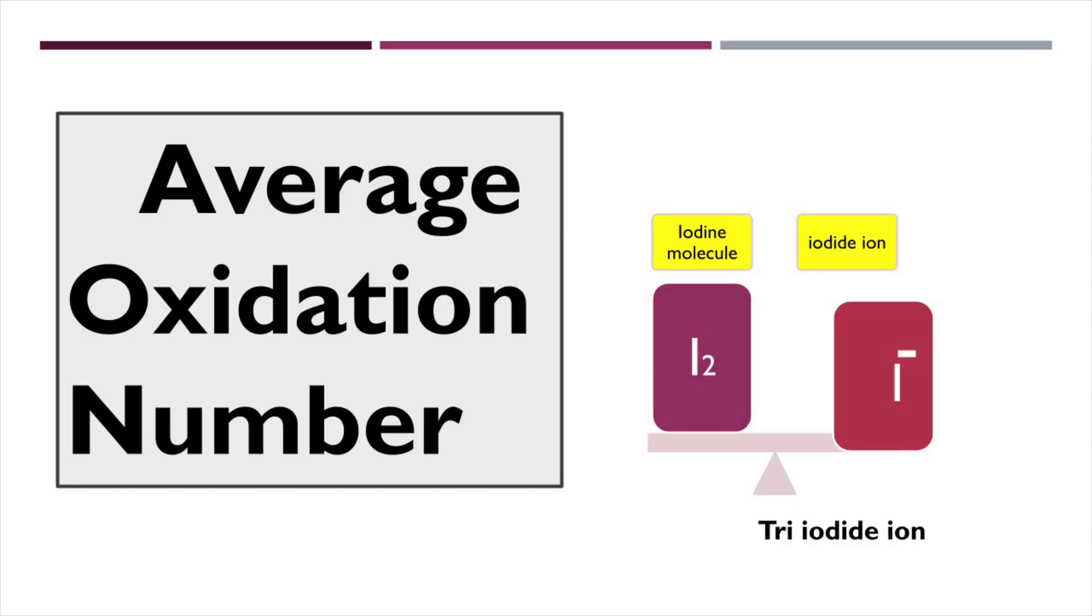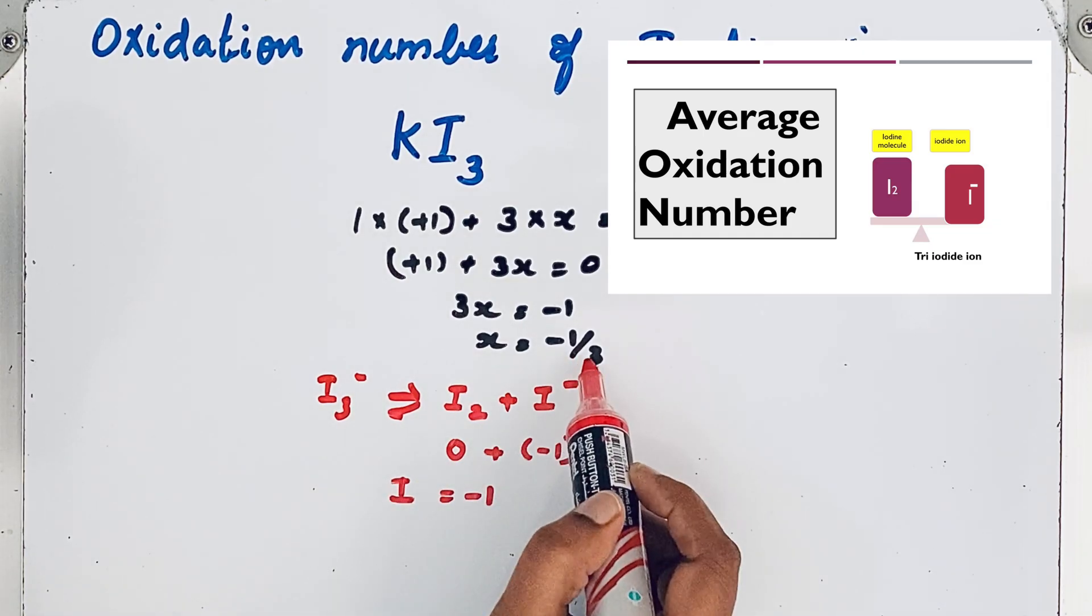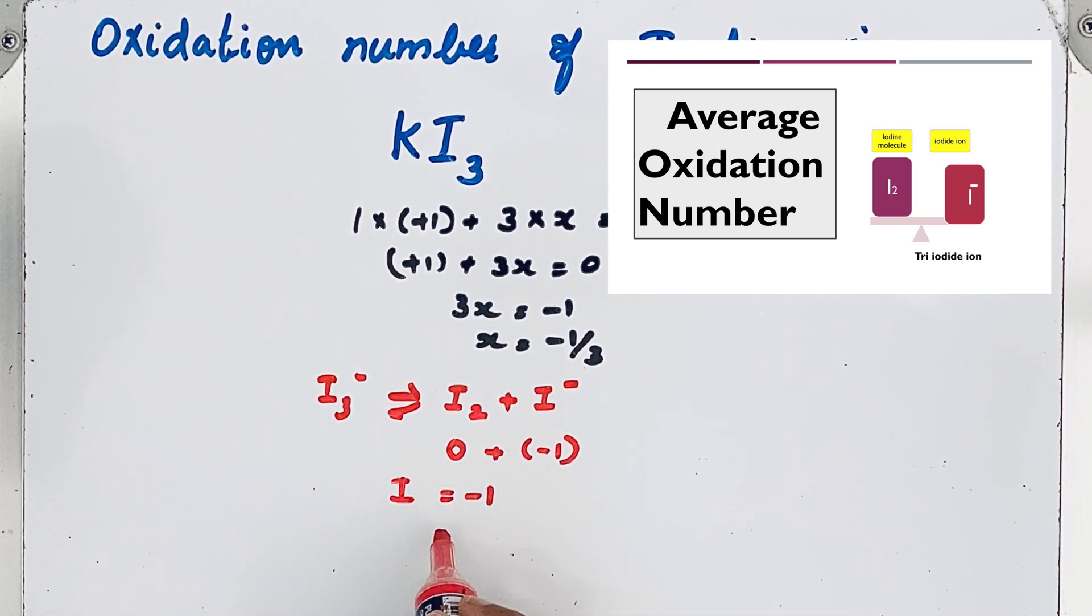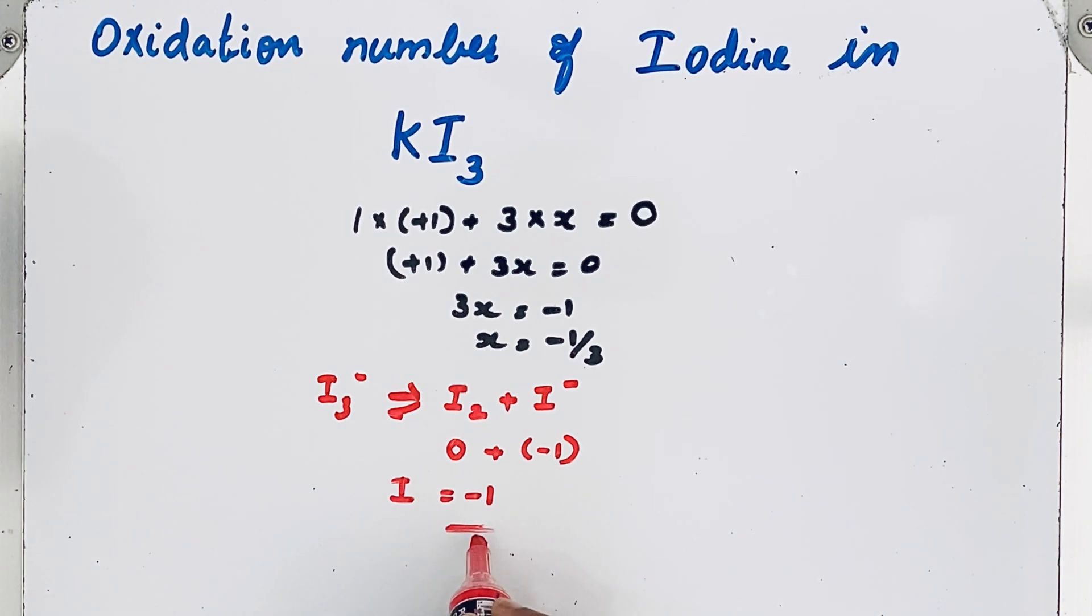So if you look at this minus 1 by 3, there are 3 iodine atoms here. So that is why it is written 3. So the oxidation number of iodine in KI₃ is minus 1. Thanks for watching.